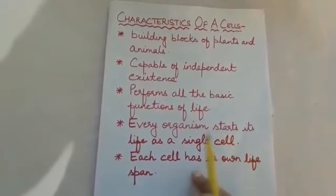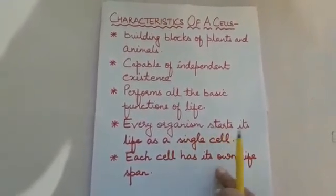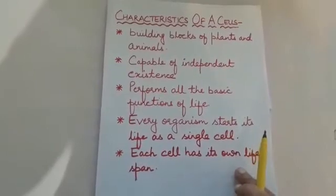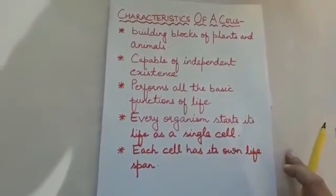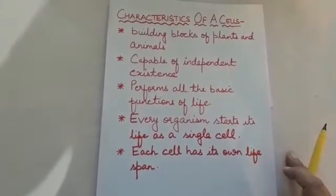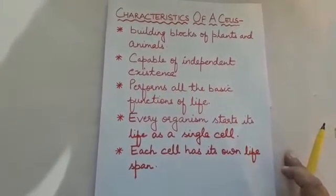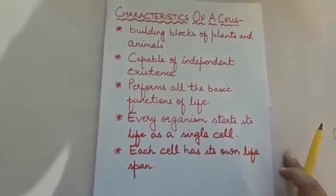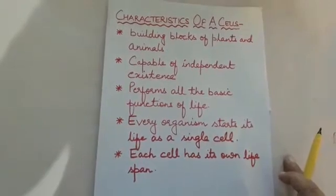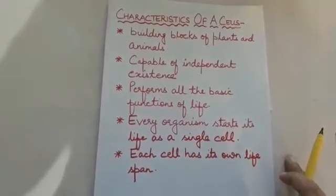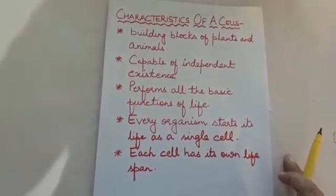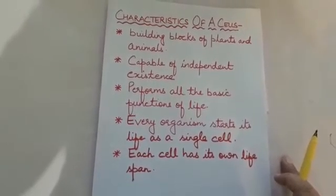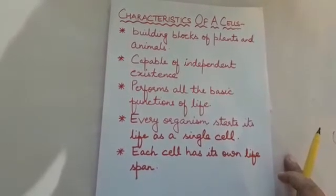The fifth characteristic is each cell has its own lifespan. The word lifespan means the period of time for which any living entity remains functional. For example, the lifespan of red blood corpuscles is about 120 days, and the lifespan of white blood corpuscles is about 15 to 20 days.